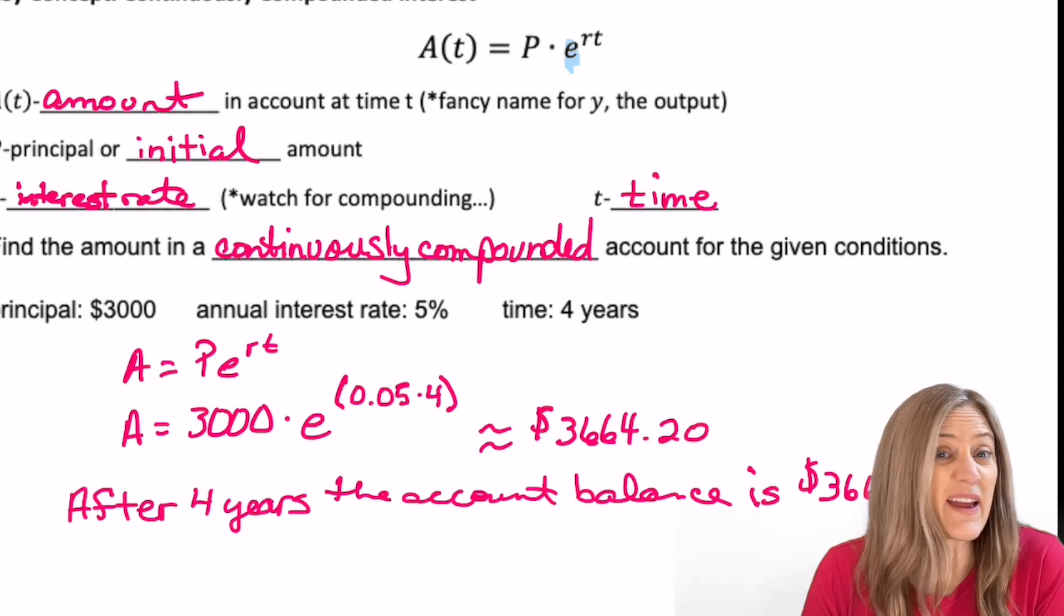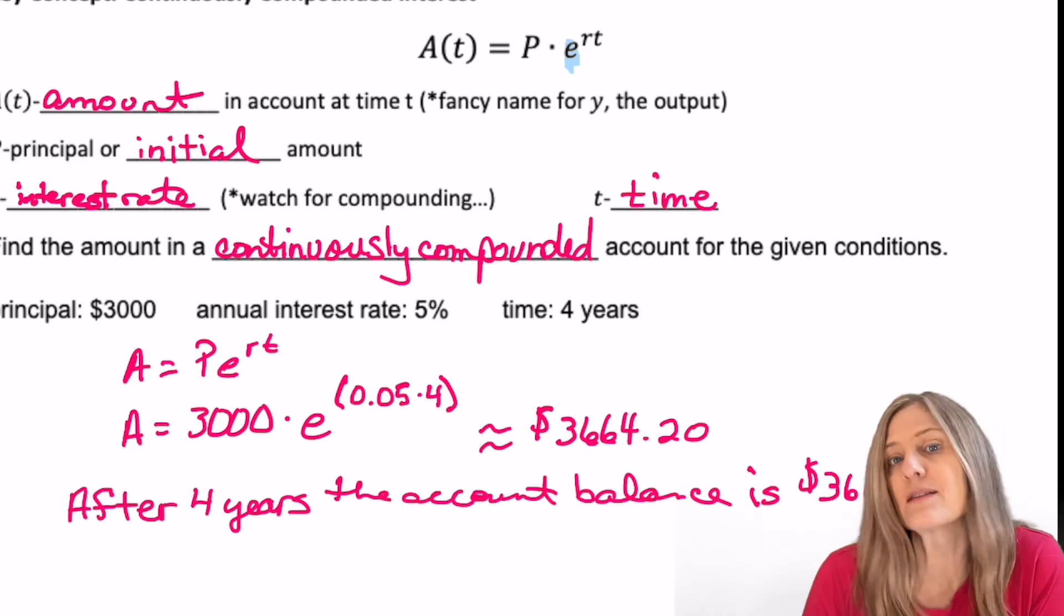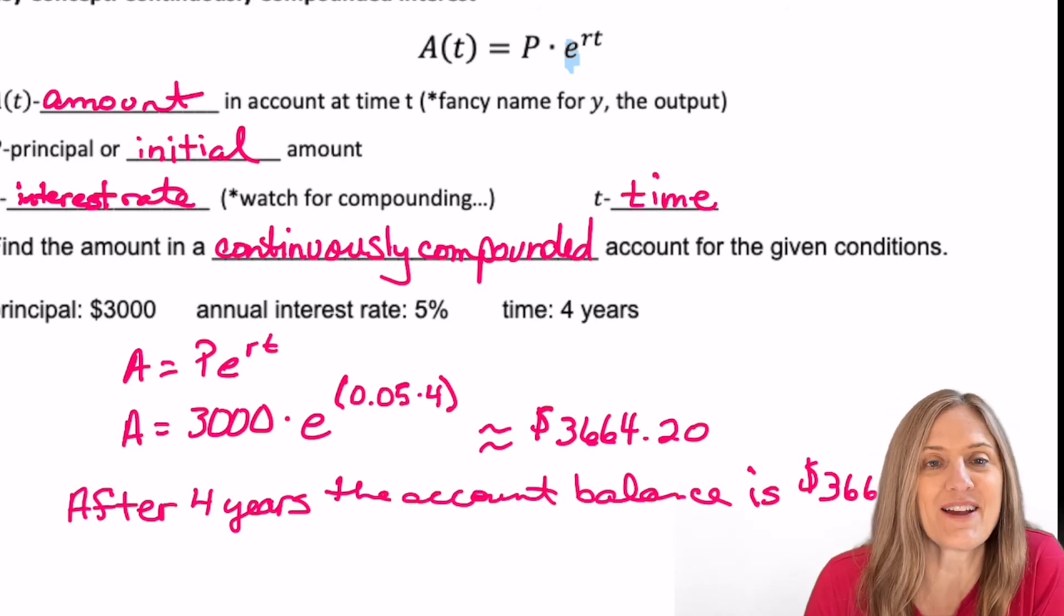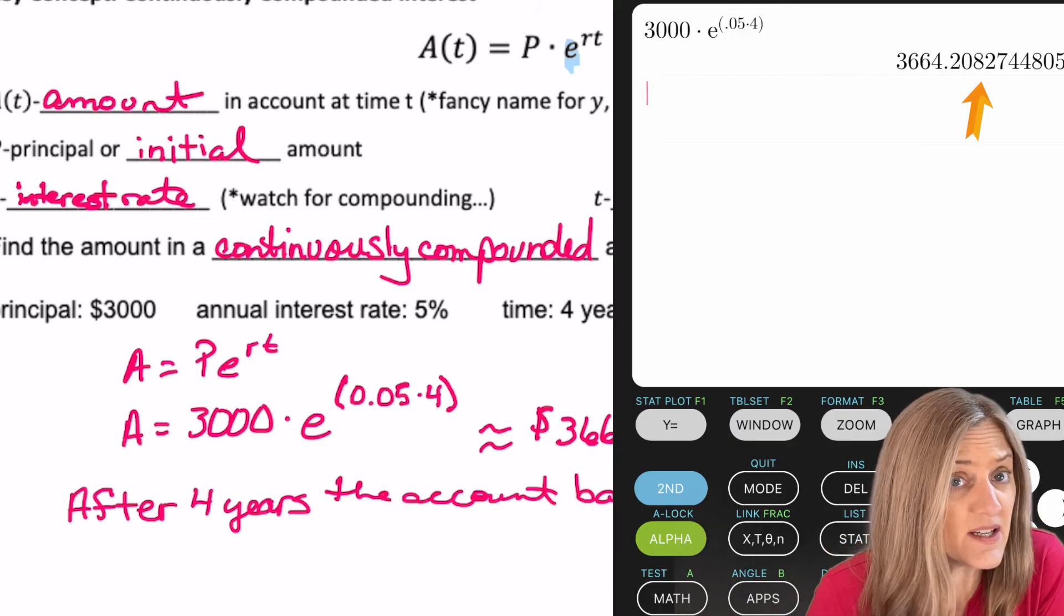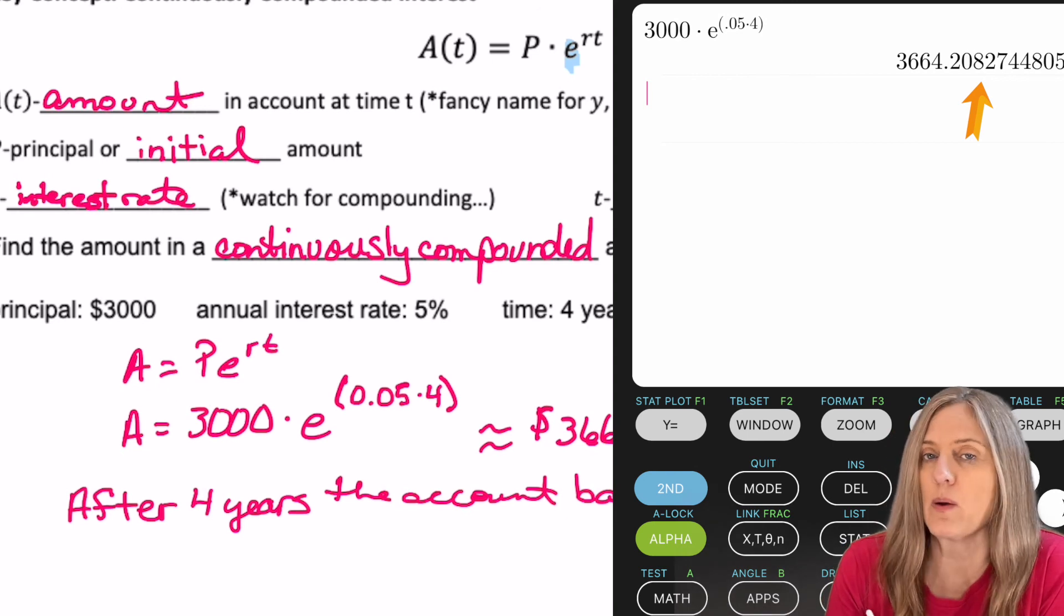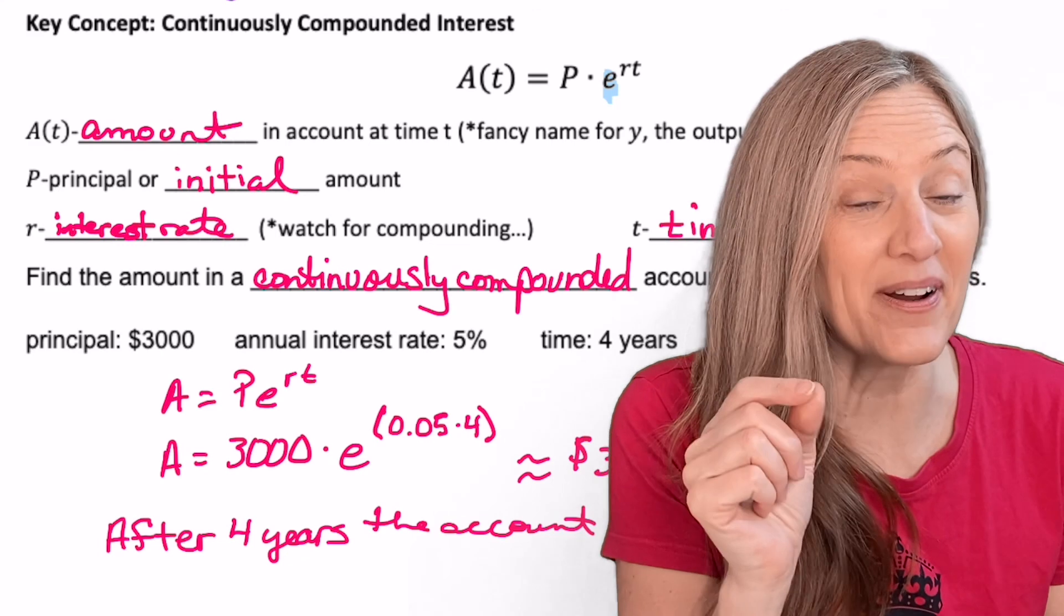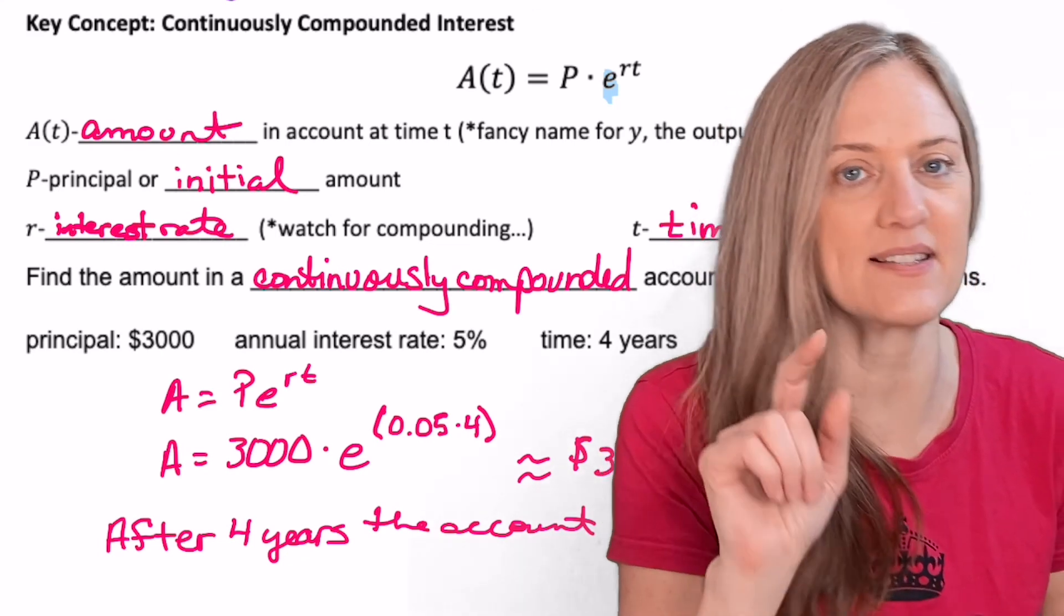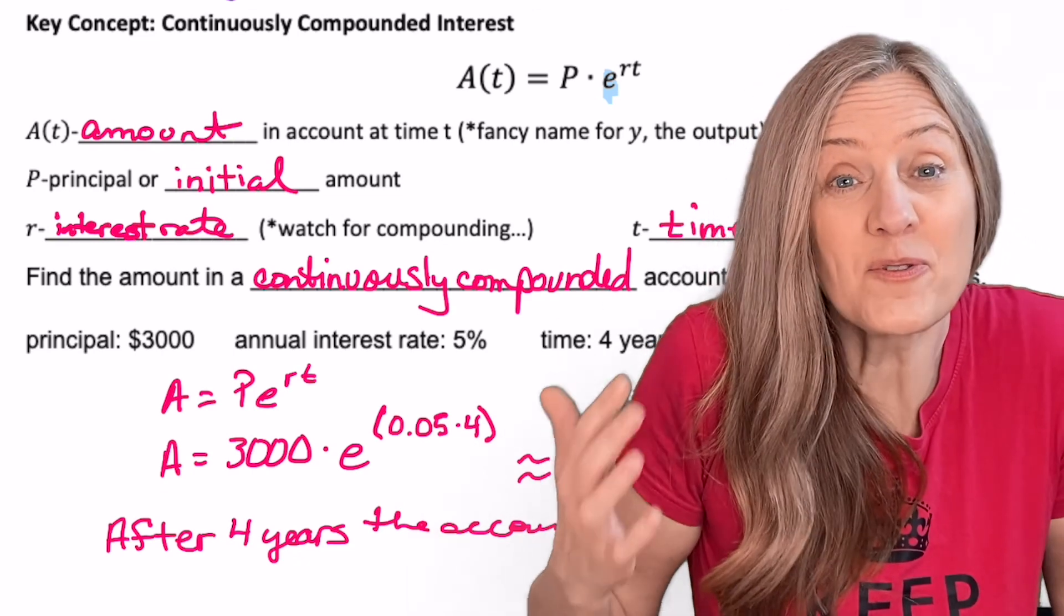So after four years, it looks like my account has earned another $664.20. So I have a total account balance of $3,664.20. Now, did you notice that if we rounded and did correct rounding, this would have rounded up to 21 cents? However, do you think the bank is going to give me that extra little portion of the penny? Probably not. Okay, remember, anytime you see the words continuously compounded, it has to have the word continuous in there, you use the almost P E R formula.